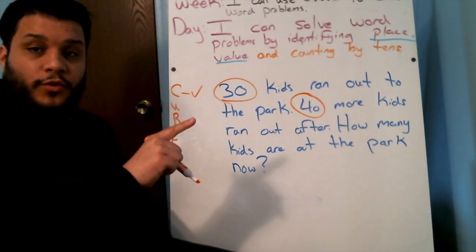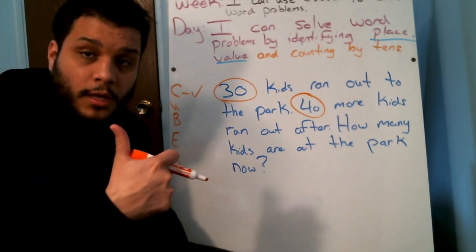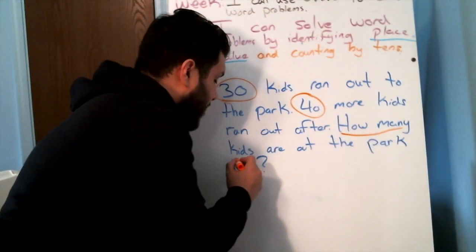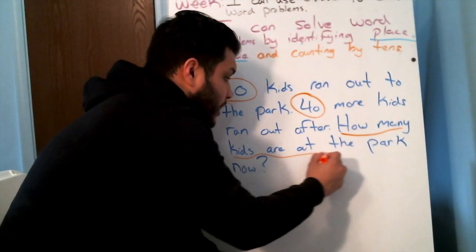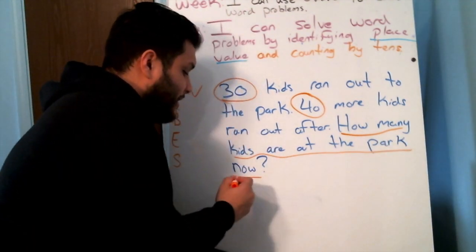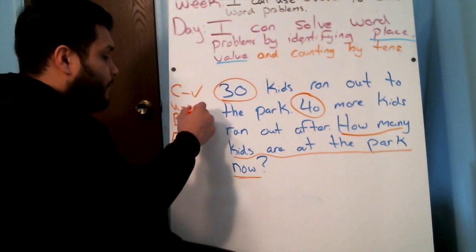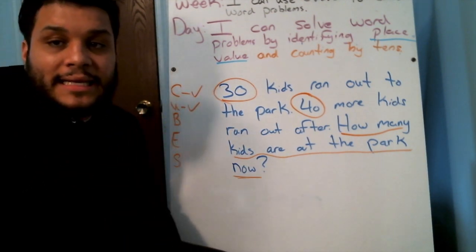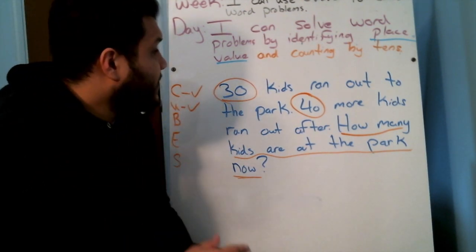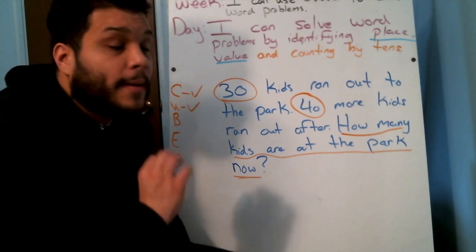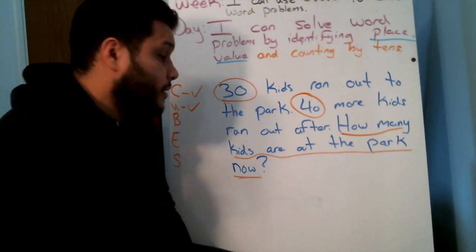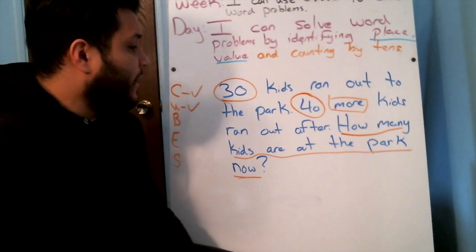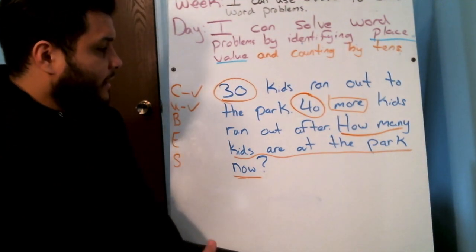U stands for underline the question. So my question is asking me: how many kids are at the park now? B stands for box in math words. 30 kids ran out to the park, 40 more — the word 'more' lets me know that we're going to add — kids ran out after. How many kids are at the park now?